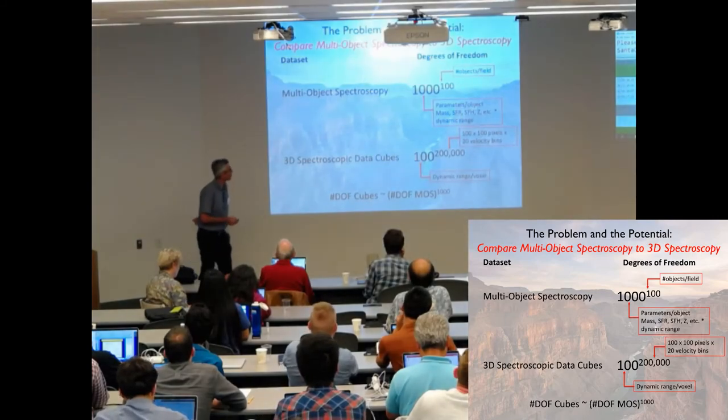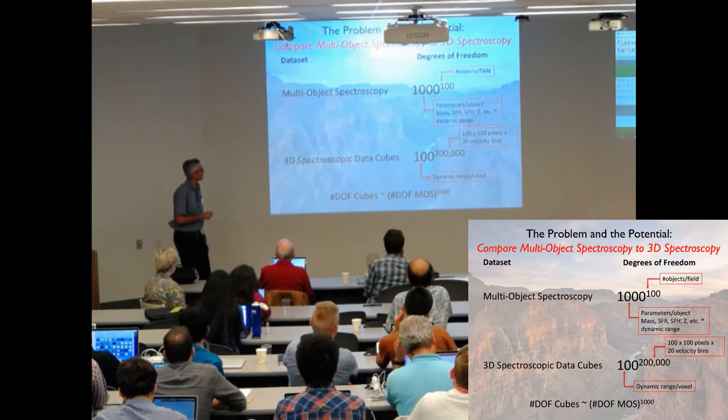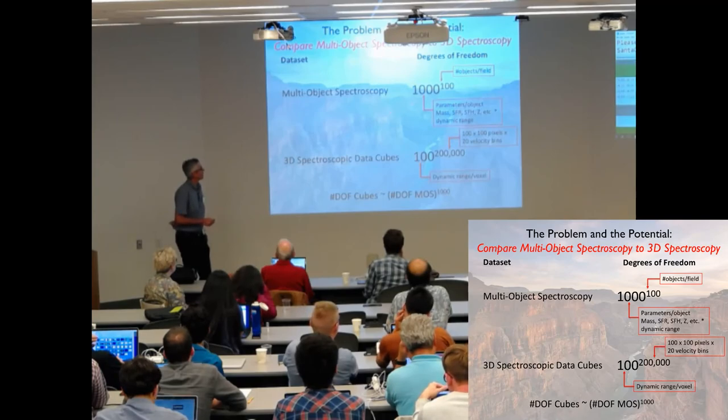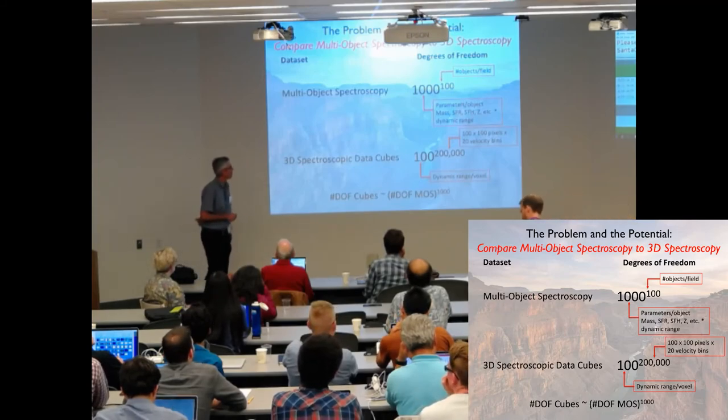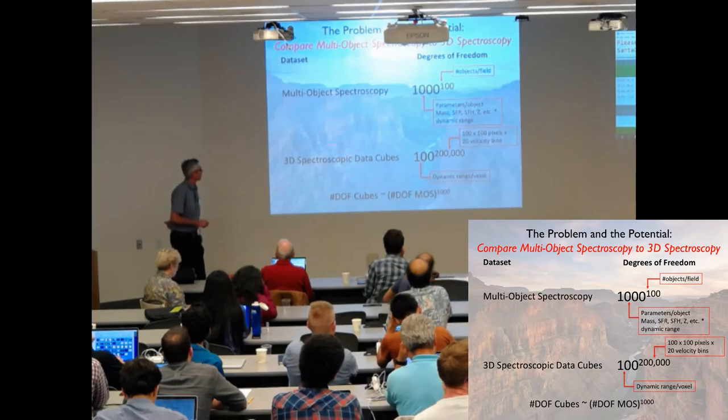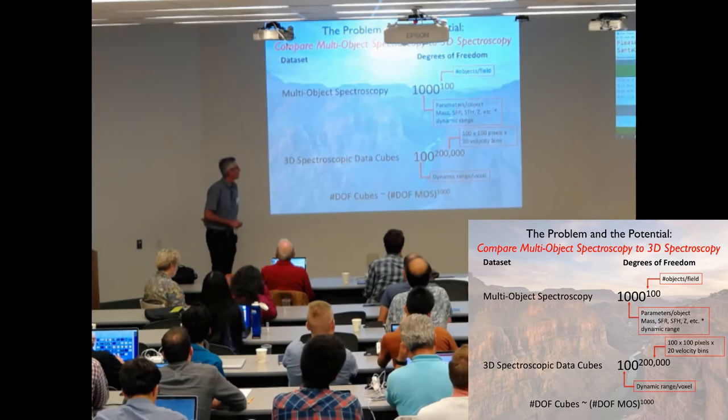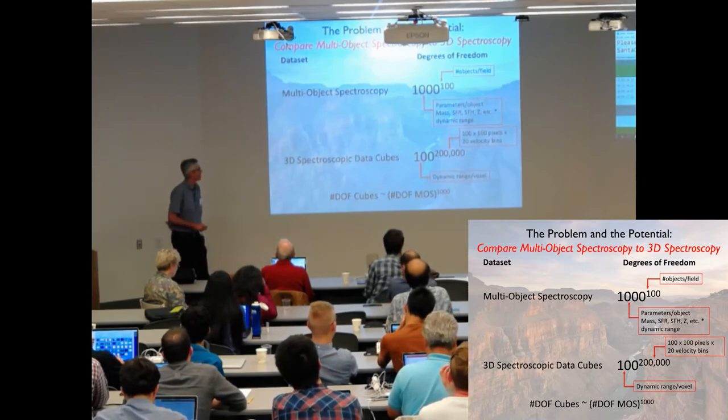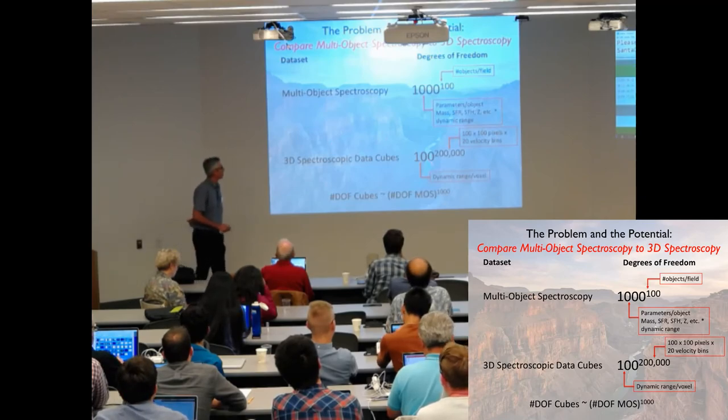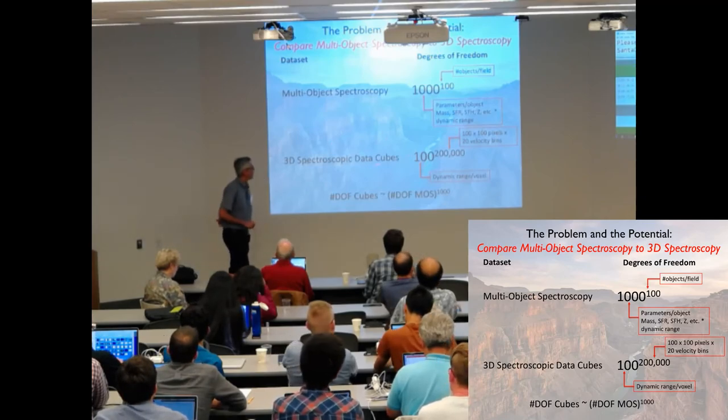In particular, 3D emission-line cubes have this interesting property. If you look at multi-object spectroscopy, you can calculate the number of degrees of freedom, and you get something like a thousand to a hundredth power. It's a small number because individual objects are galaxies, and they can be parameterized by a small number of parameters. Whereas, if you look at 3D spectroscopic data cubes, an individual voxel can maybe have a hundred dynamic range, and you might have two hundred thousand voxels, so you have this many degrees of freedom. We have a more unbounded problem.